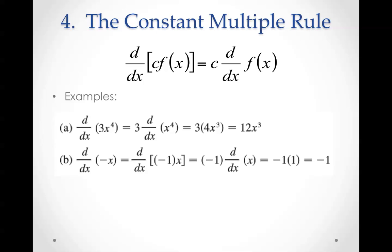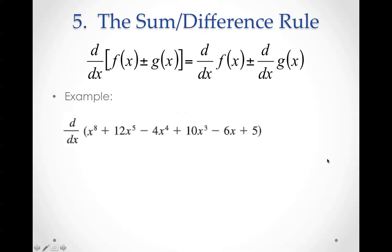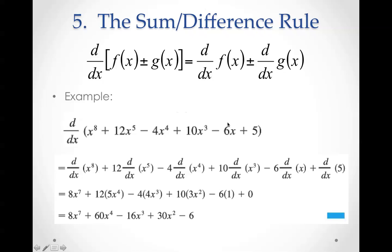Here's an example. Try these on your own. 3 times x to the 4th is going to be 4 times 3, which is 12, and then x to the 4 minus 1. The sum and difference rule - here's an example. If it's in here like this, we can add and subtract the individual derivatives. Follow this example and see if you come out to the same solution that I did: 8x to the 7th plus 60x to the 4th minus 16x to the 3rd plus 30x squared minus 6.